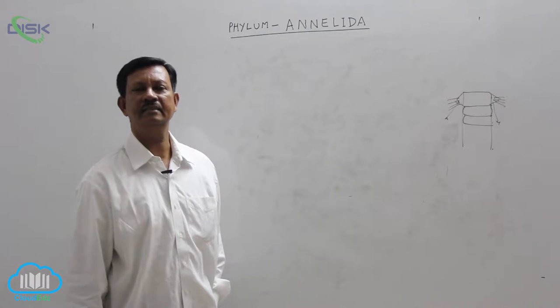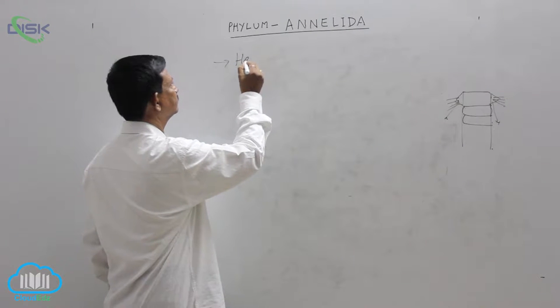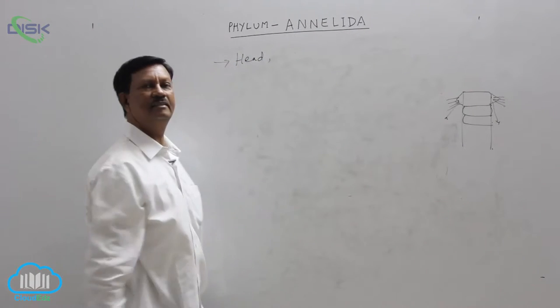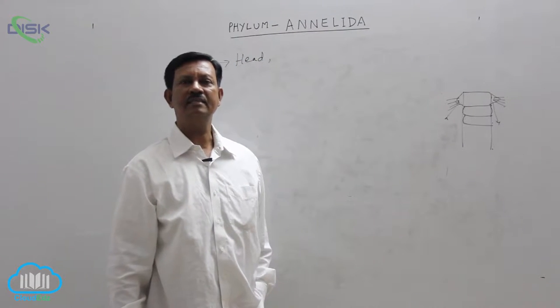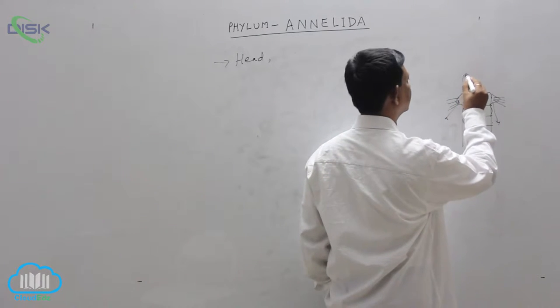Cephalization. At the anterior end of the body there is a distinct head present. In the head the important sensory organs are present like eyes, tentacles and palps.